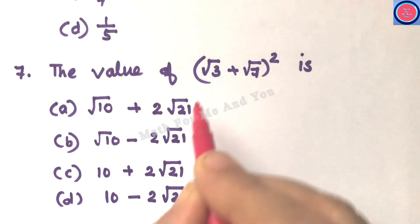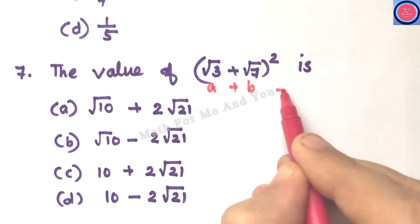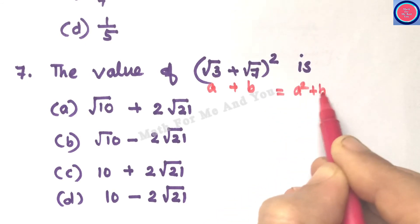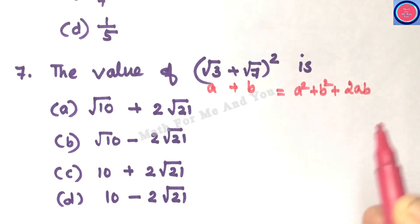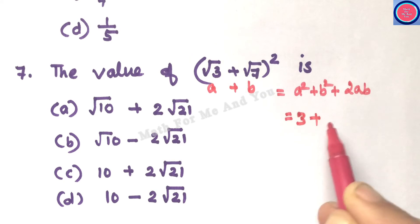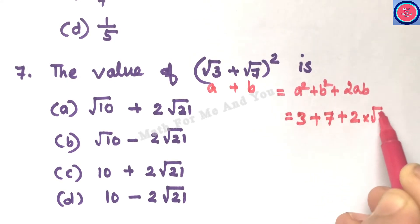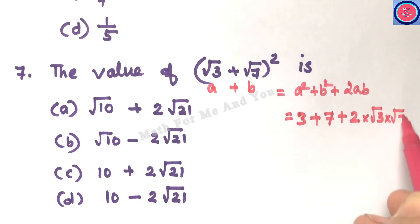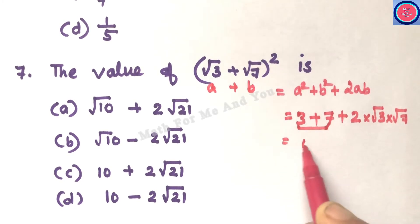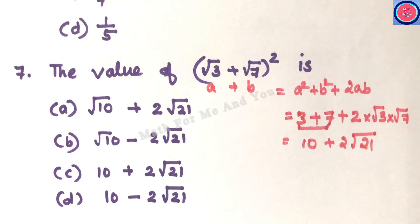Q7: What is the value of (√3 + √7)²? Using the identity (a + b)² = a² + b² + 2ab: a² = (√3)² = 3, b² = (√7)² = 7, and 2ab = 2 × √3 × √7 = 2√21. So the result is 3 + 7 + 2√21 = 10 + 2√21 — option C is the correct answer.